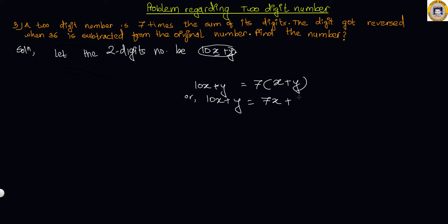So 10X plus Y equals 7X plus 7Y. Subtracting 7X from both sides gives 3X, and subtracting Y from both sides gives 6Y on the right. So 3X equals 6Y, and dividing both sides by 3 gives X equals 2Y. This is equation 1.